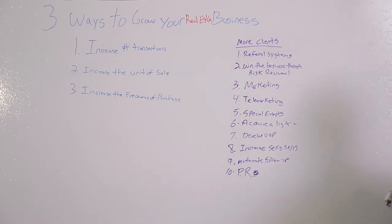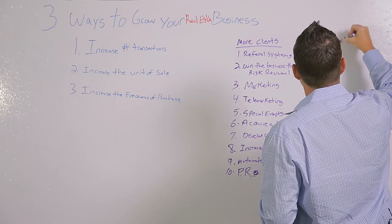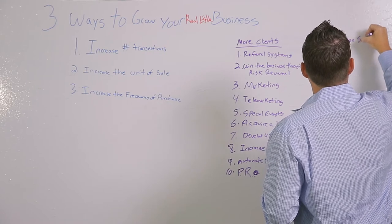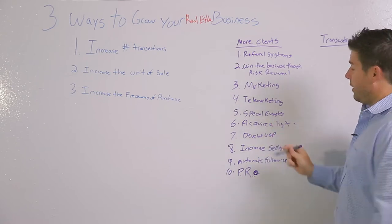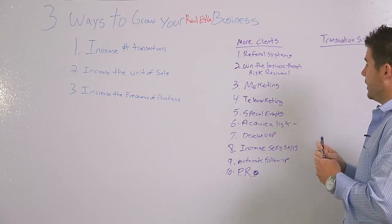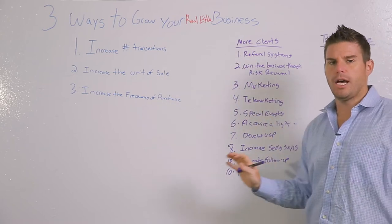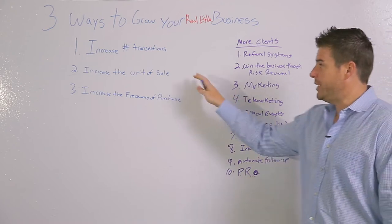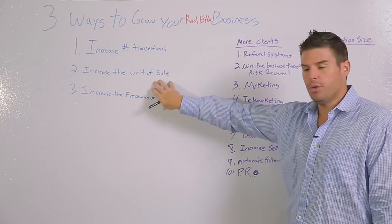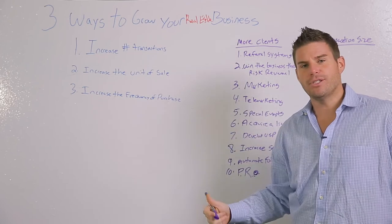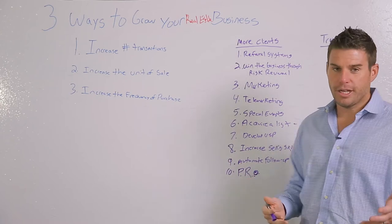The next thing we're going to do is look at transaction size — the unit of sale. There's no doubt we could probably grow our business when it comes to more transactions, but there are things you're probably not doing to optimum. Now let's look at unit of sale. How do we make more per transaction? I don't want to sell more houses — I don't have any more time in the day. How do I just make more per transaction? We'll show you how we did that.